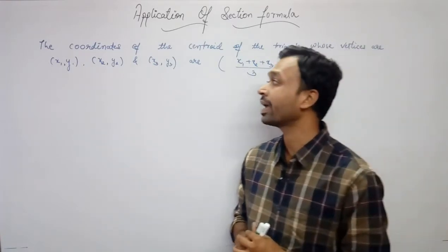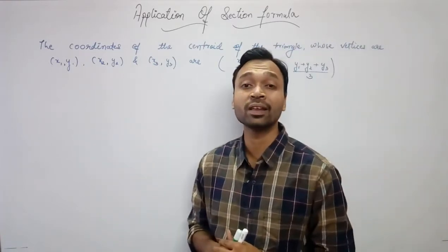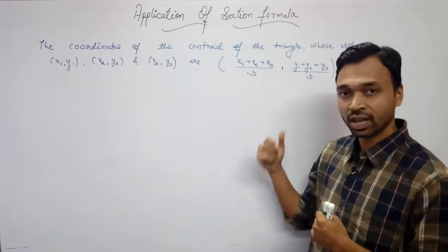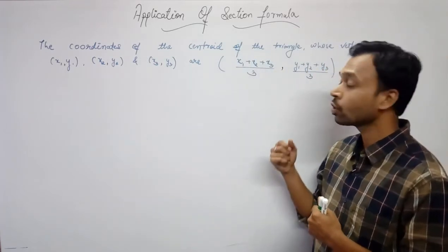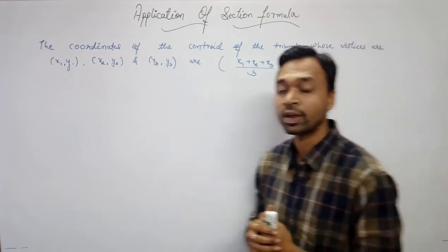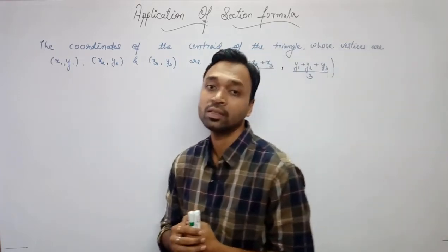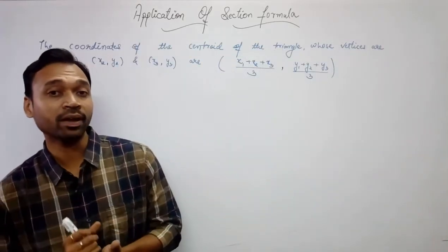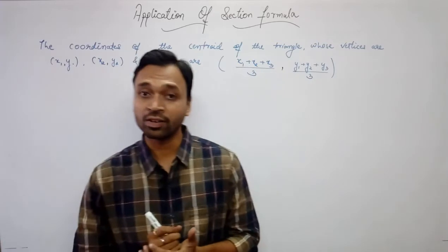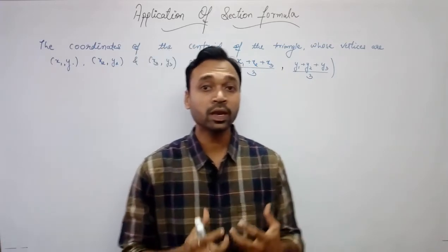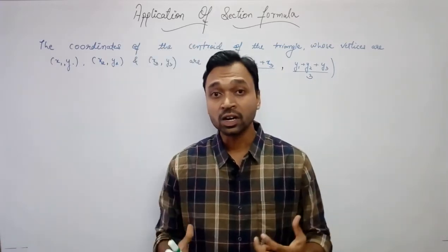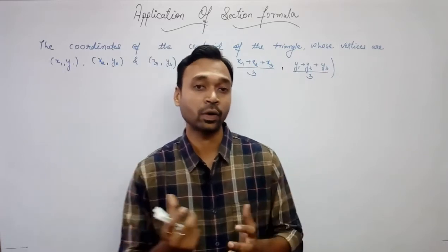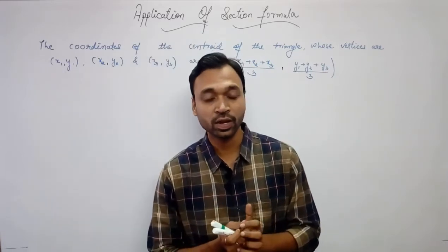(x2, y2) and (x3, y3) are given as (x1+x2+x3)/3, (y1+y2+y3)/3. This is an important application of the section formula using the terms triangle, median and centroid.